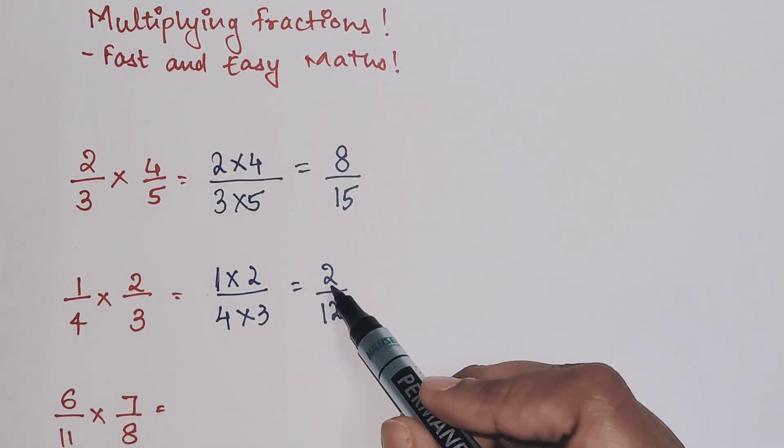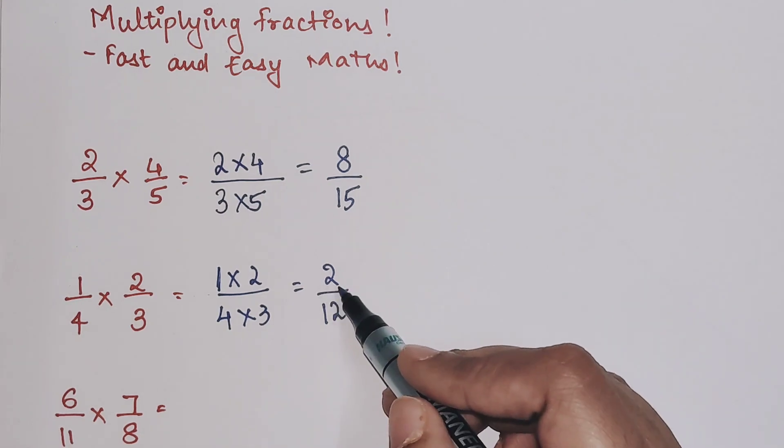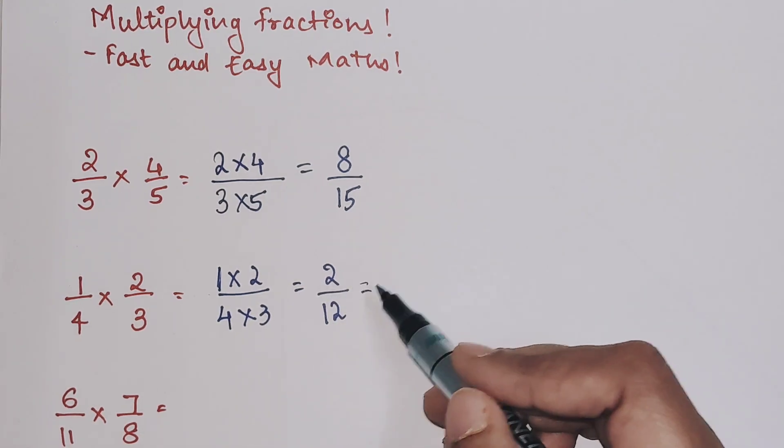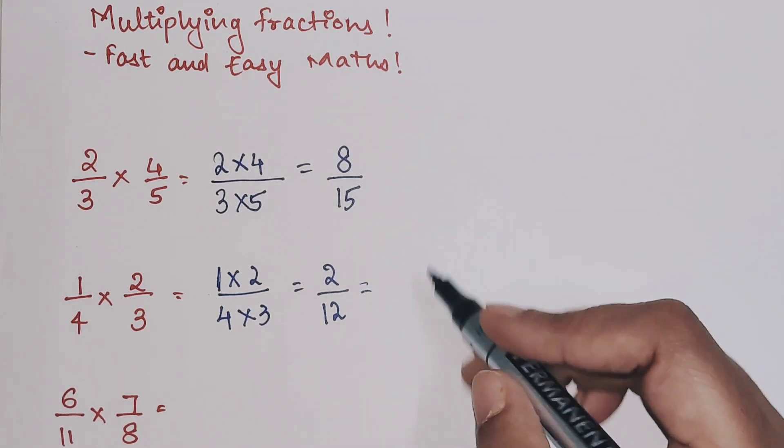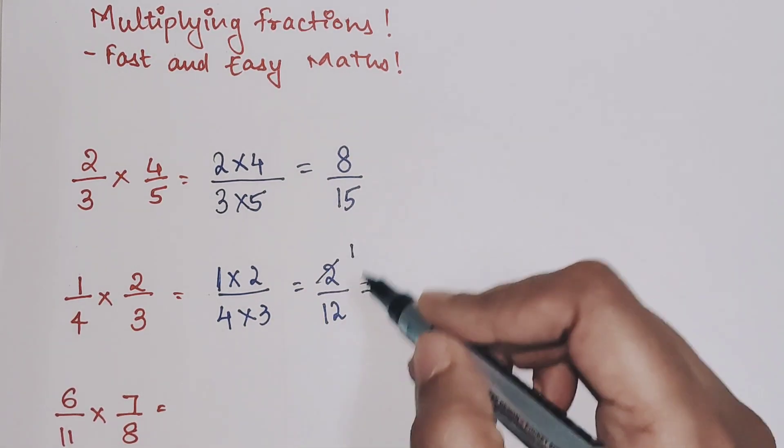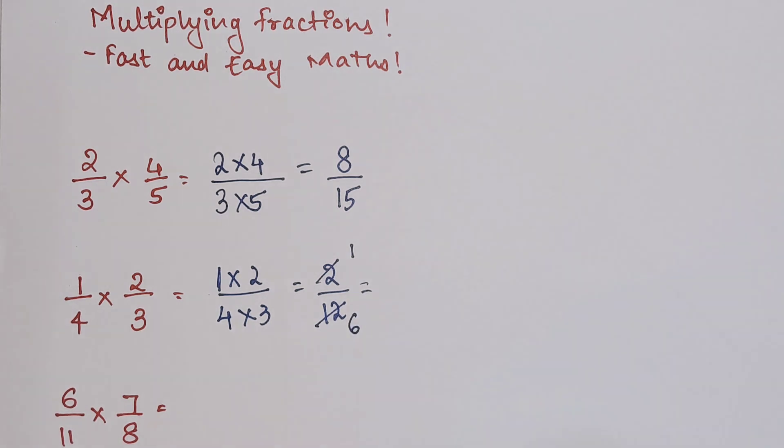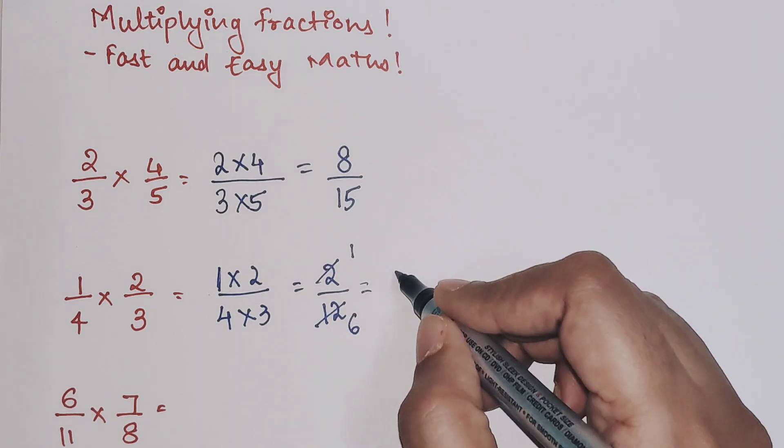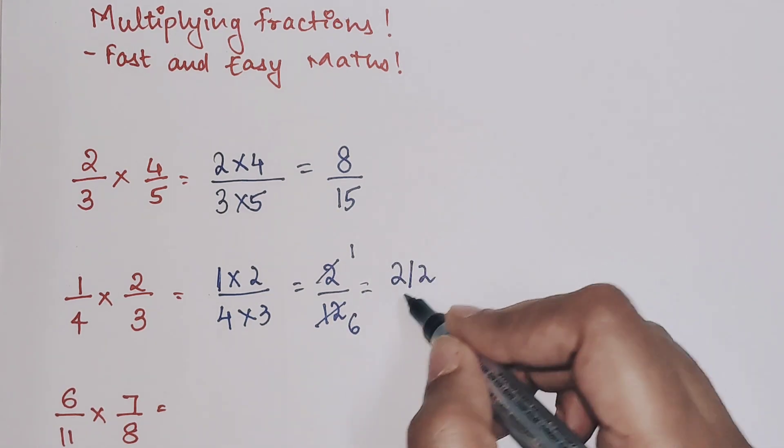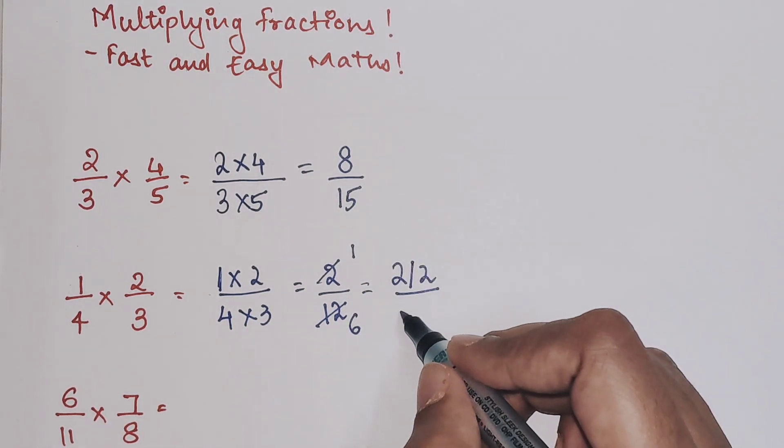Basically here I can write this as 2 and 12. Both of them are even. So obviously 2 is dividing 12. We know that 2 ones are, and this gives us 6. I am dividing the numerator and the denominator by 2 because both of them are even.